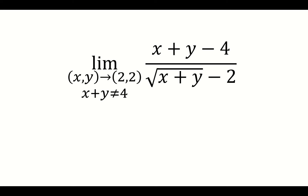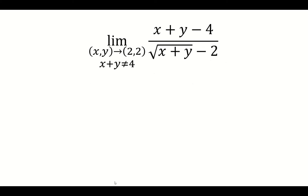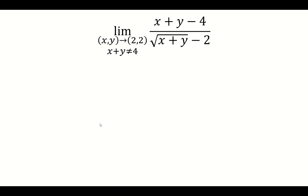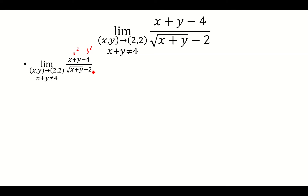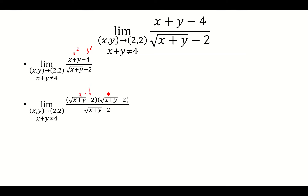Find the limit as x and y approach (2, 2) of (x + y - 4) over the square root of (x + y - 2). Let's treat x + y as a squared, and let's treat 4 as b squared. We have a squared minus b squared, and we know that factors as (a - b)(a + b).